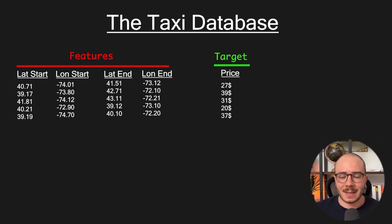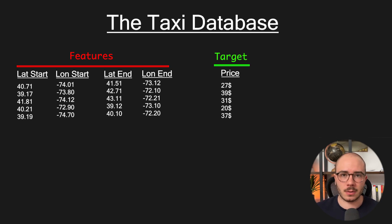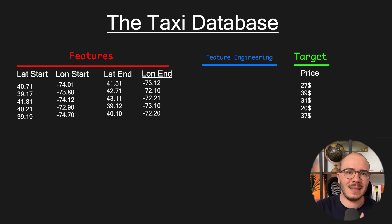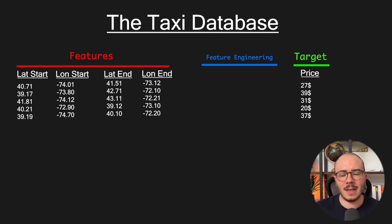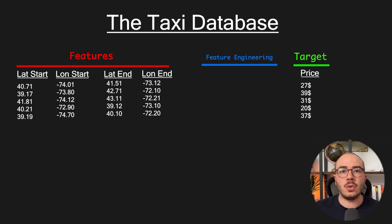We can agree that these raw features are not optimal, because it will be very difficult for the model to find a relation between the latitude and longitude of the start and end points and the price. That would be very complex for the model, even though in reality the relationship is pretty simple. So we need to help it.